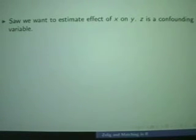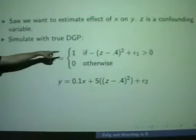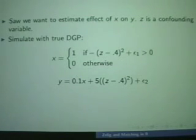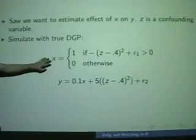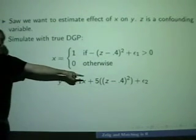So let's do some R. So let's do a simulation. So again, we want to look at the effect of X on Y and we've got just a single confounding variable Z. And so here's the data generating process. So our X, whether or not you're treated, is a function of this Z. And then the outcome we're interested in is a function of both X and also the confounding variable.